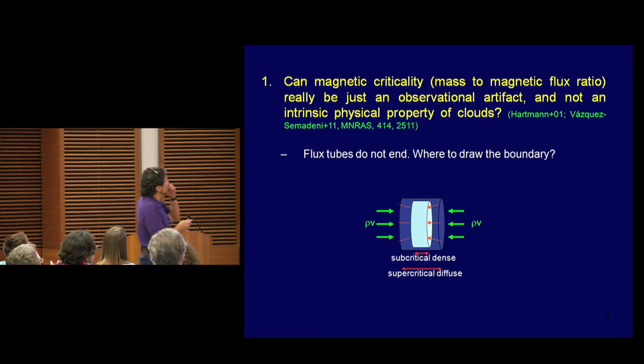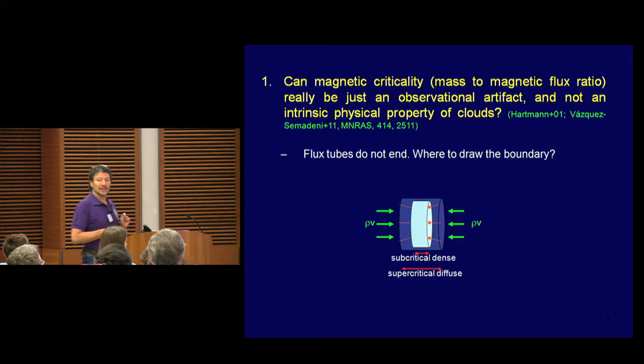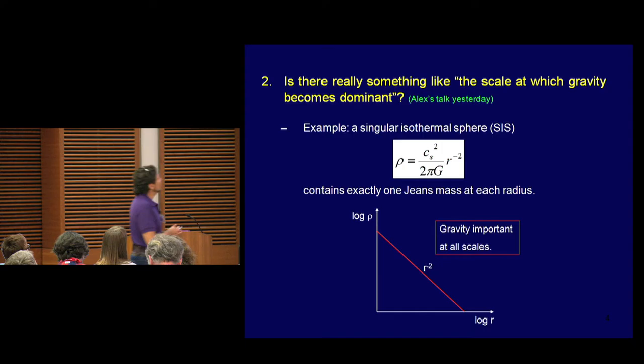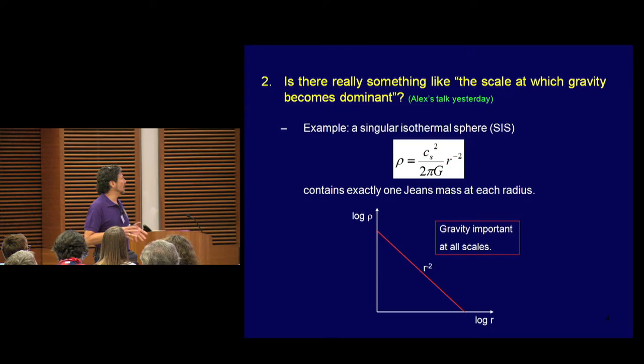The second question: yesterday Alex mentioned the scale at which gravity becomes dominant — is there really such a thing? For example, a singular isothermal sphere contains exactly one Jeans mass at each radius. So there is no single scale at which gravity becomes dominant. Gravity is equally important at all scales for a singular isothermal sphere. Does it make sense to talk about the scale at which gravity becomes important?